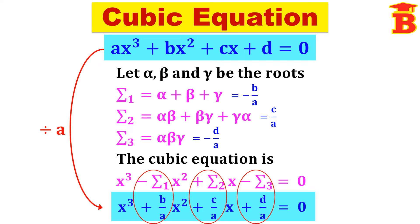This we can remember very easily. Look at the cubic equation, divide by the first coefficient so the first term is x cubed, then take the values of sigma 1, sigma 2, sigma 3 in order and change the sign of the alternative terms. Sigma 1 has a negative sign, sigma 2 has a positive sign, and sigma 3 has a negative sign.